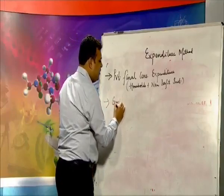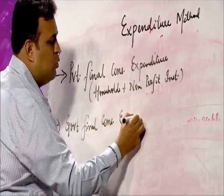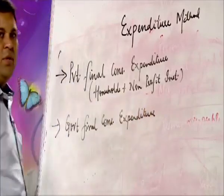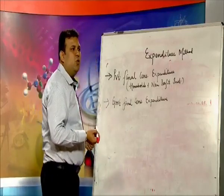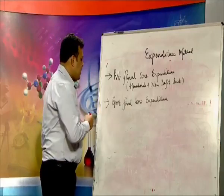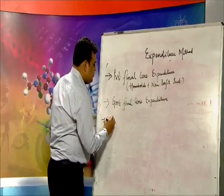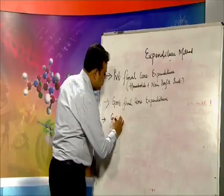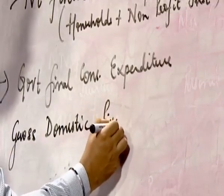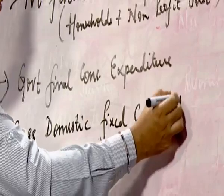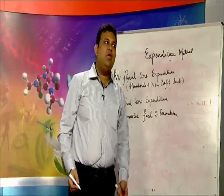Then we have government final consumption expenditure. Government is also spending on GDP — it purchases cement, raw material, everything. So government is a producer as well as a consumer. Then we have gross domestic fixed capital formation, which means we are investing on fixed assets: building, plant, machinery, equipment.